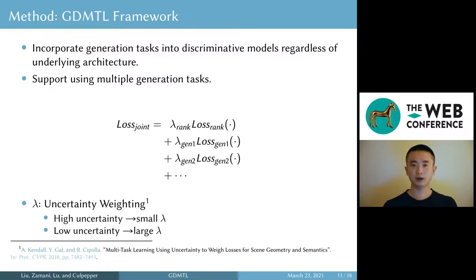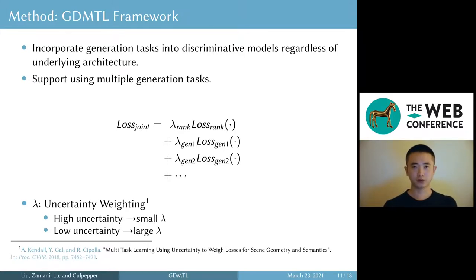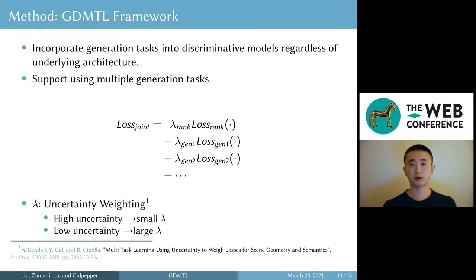To determine the values of the lambda weights, we use a technique called uncertainty weighting. This technique estimates the uncertainty of a task, which represents our confidence in the task. If we have no confidence in a task, the contribution of that task to the joint loss will be reduced. This is a dynamic process — as training goes on, if the model gets better and better at a specific task, the contribution of that task will increase correspondingly.